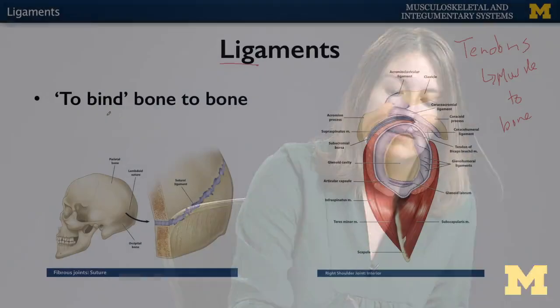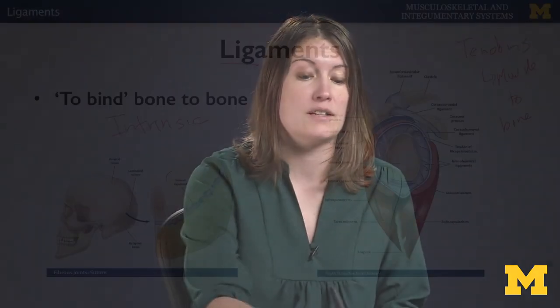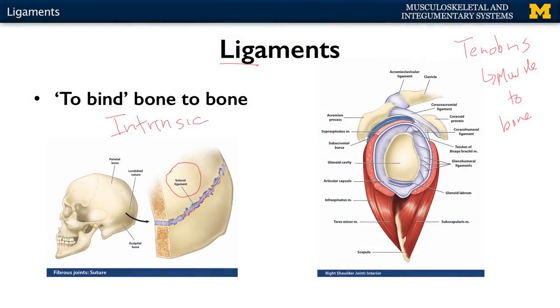Ligaments can be organized into two main categories. You can have intrinsic ligaments, which are going to actually be connecting bones to one another. The best example of that is a sutural ligament — that connective tissue right in between the bone, what's actually joining the two bones together.